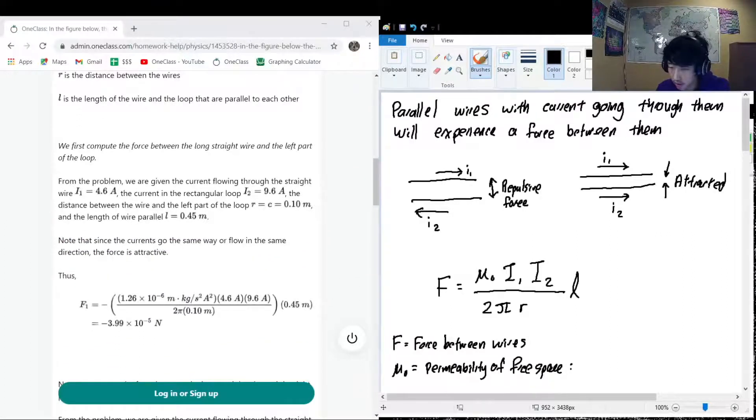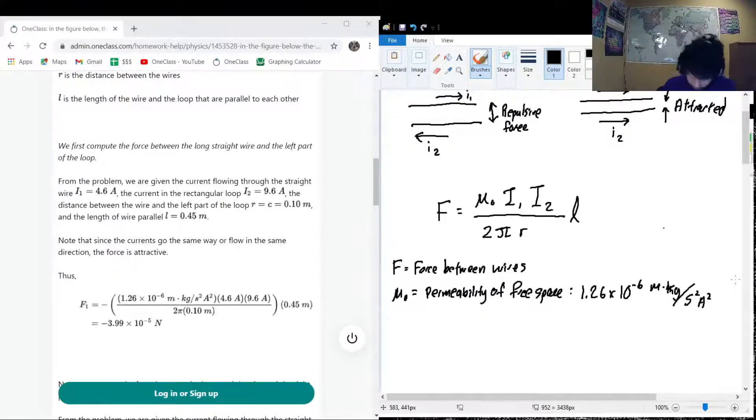The units are meter per kilogram second squared ampere squared. i1 and i2 are currents in the parallel wires.